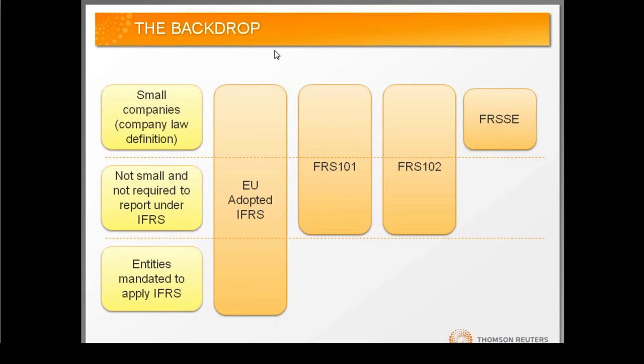FRS 102 is being termed UK GAAP plus, or timing difference plus approach, and in many ways it's an extension to the current UK GAAP. The graphic on screen summarises who can apply each of the four main standards. All entities can apply EU adopted IFRS, but this is mandated for those currently producing consolidated accounts for EU listed groups. Those not required to adopt IFRS can adopt either FRS 101 or FRS 102. Most IFRS groups will likely adopt FRS 101 while the remaining will adopt 102. Small companies as per the company law definition will have the option of adopting the FRS 102 standards.